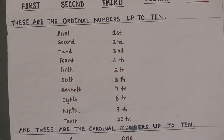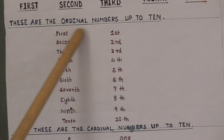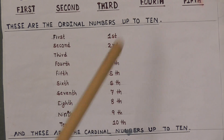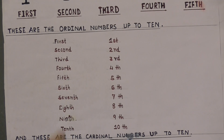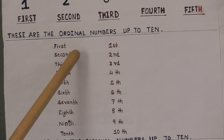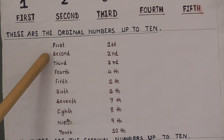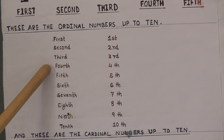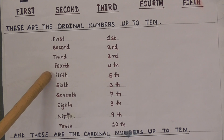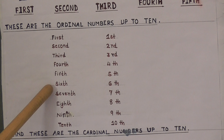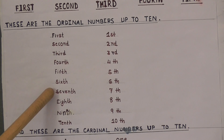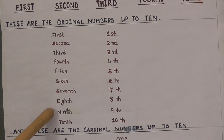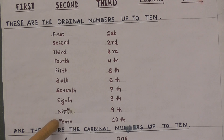Here is a list of Ordinal Numbers up to 10: 1st, 2nd, 3rd, 4th, 5th, 6th, 7th, 8th, 9th, and 10th.